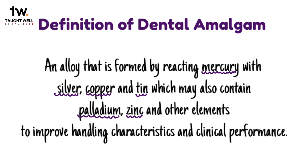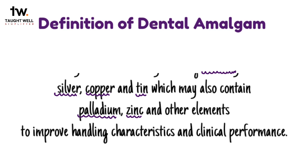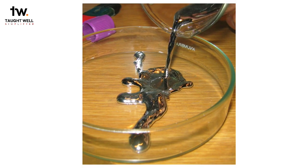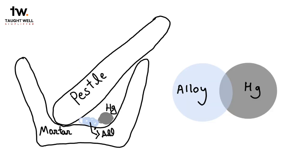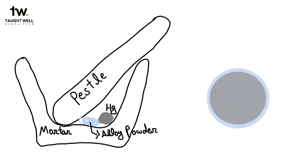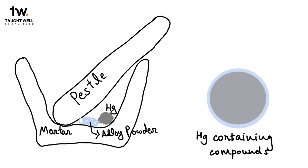This definition tells us all that we need to know about the composition of amalgam. Mercury is a liquid at room temperature. When metal particles are mixed with mercury, the outer portion of the particles dissolves into the mercury. At the same time, the mercury diffuses into the metal particles. When the solubility of the metal in mercury is exceeded, crystals of mercury-containing compounds start to precipitate within the mercury.